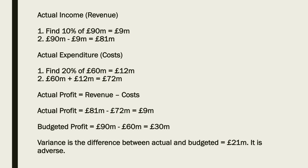So the variance is the difference between those two numbers — the difference between 30 million and 9 million — which is 21 million pounds. Now let's work out whether this is adverse or favourable. Your budgeted profit was 30 million; you only actually got 9 million. That's not as good as you hoped, so that is adverse.